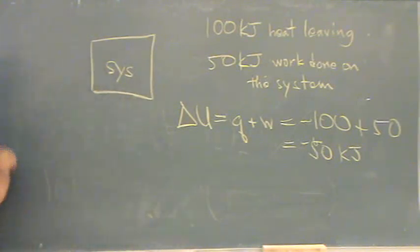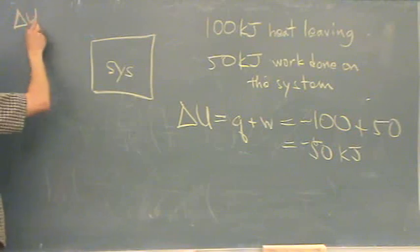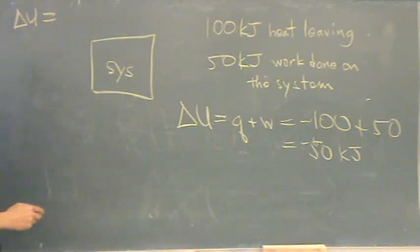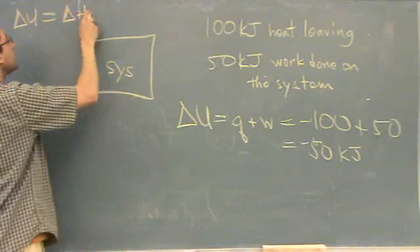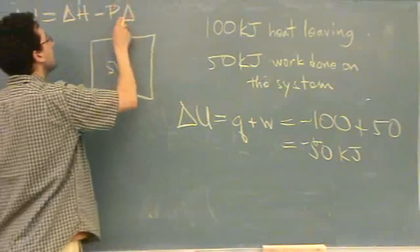So delta U, a constant pressure system, which most things are, is equal to delta H minus P delta V.